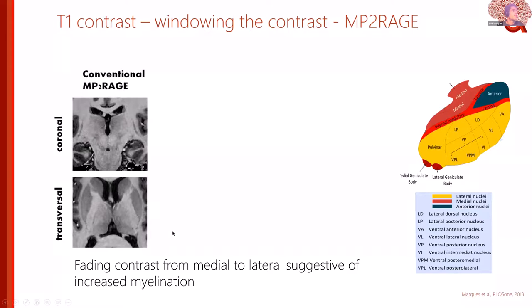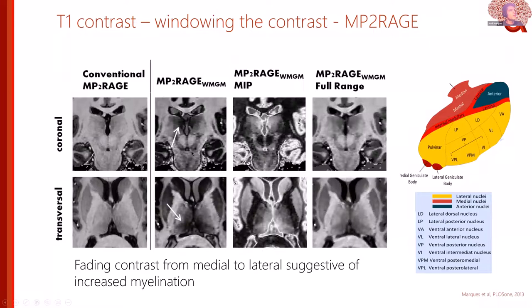For T1-weighted images, we see a fading contrast from medial to lateral, consistent with T1 being related to myelination — there is increased myelination from the medial towards the lateral thalamus. One thing you can try to improve this is to window the contrast by changing the sequence parameters rather than just adjusting the display intensity scale. This way you can start seeing again the medial parts highlighted and the edges becoming more clearly delineated.